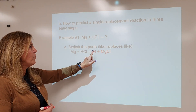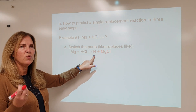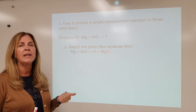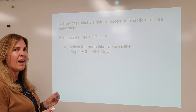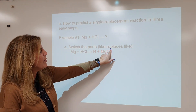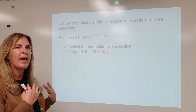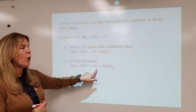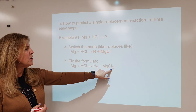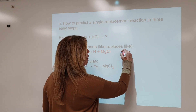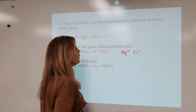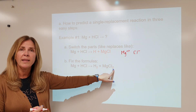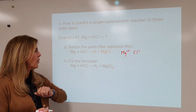Things we need to recognize: hydrogen is one of the seven diatomic molecules — hydrogen, nitrogen, oxygen, fluorine, chlorine, bromine, and iodine are always diatomic. We also need to apply chemical naming rules. So H2 is the correct form as a diatomic molecule. The ion for magnesium is 2+, the ion for chloride is -1, so we write MgCl2. Lastly, we balance the equation — one magnesium on each side, and we put a 2 in front of HCl to balance the hydrogen and chlorine.